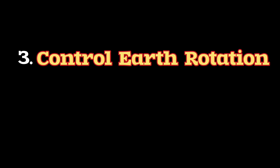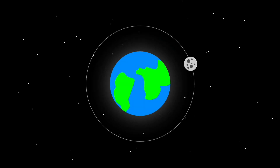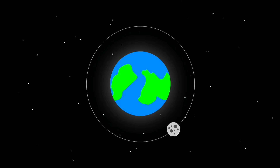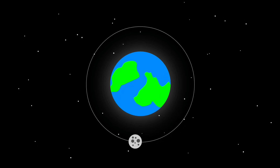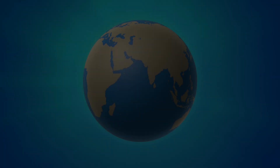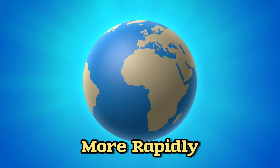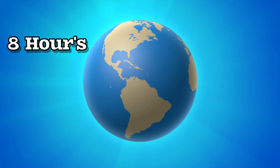Third, the Moon controls Earth's rotation. The Moon significantly influences the rotation of Earth on its axis. Earth completes one rotation every 24 hours. Without the presence of the Moon, Earth's rotation could occur more rapidly, shortening the length of a day to 8 hours.